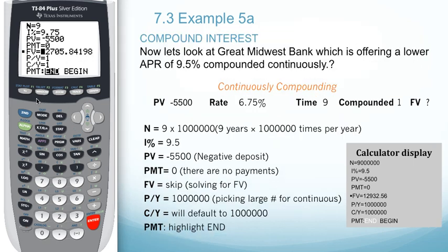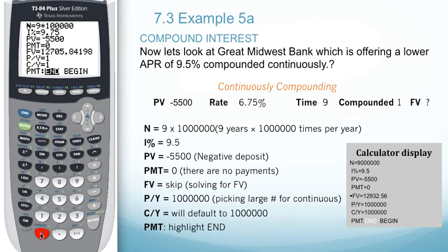Although using the formula might be easier, we can actually use the TVM solver to approximate the continuously compounding interest. We start up at N, and what we end up with is nine times a million for our compounding periods. Remember that we are compounding every second, every minute of every day, so this is just an approximation.